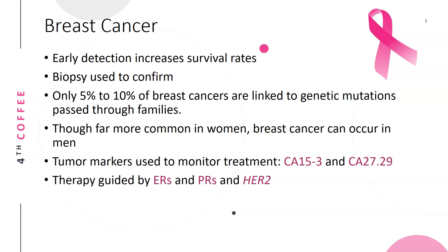Let's start with breast cancer. Early detection of breast cancer will increase survival rates. A biopsy is used to confirm early detection, which is done using mammograms. Only five to ten percent of breast cancers are linked to genetic mutations passed through families — that's the BRCA1 and BRCA2 genes. Though far more common in women, breast cancer can occur in men also.